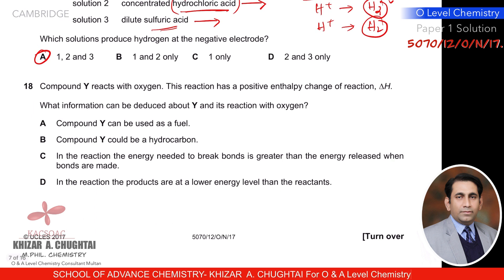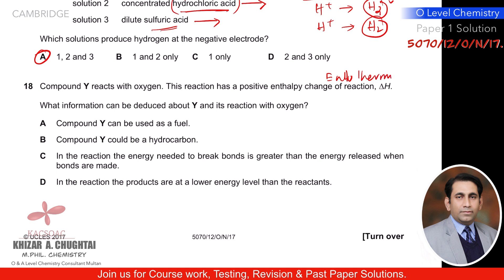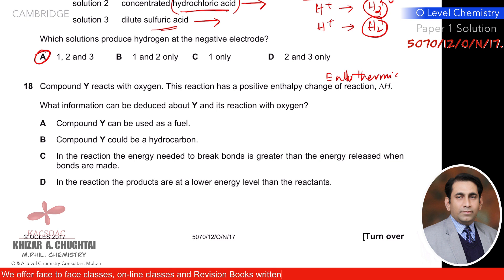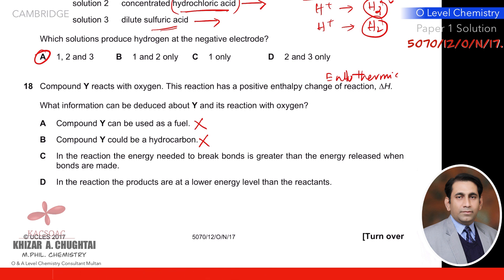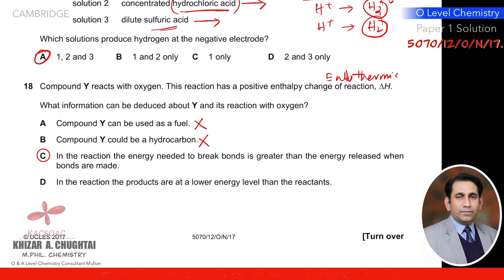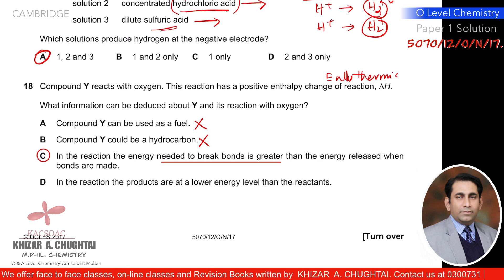Question eighteen: compound Y reacts with oxygen and the reaction has a positive enthalpy change (ΔH is positive), meaning the reaction is endothermic. It cannot be used as a fuel. It is unlikely to be a hydrocarbon since hydrocarbons combust exothermically. The correct deduction: in this reaction, the energy needed to break bonds is greater than the energy released when bonds are formed — the proper description of an endothermic reaction. So C is the correct option.